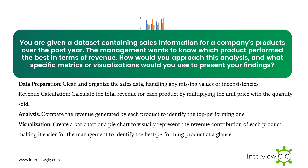Given sales data for a company's products over the past year, how would you determine which product performed best in terms of revenue? I would clean and organize the data, calculate total revenue for each product by multiplying unit price by quantity sold, compare revenues across products to identify the top performer, and create a bar chart or pie chart to visually represent each product's revenue contribution — making it easy for management to identify the best performing product at a glance.